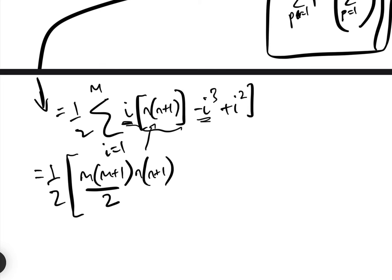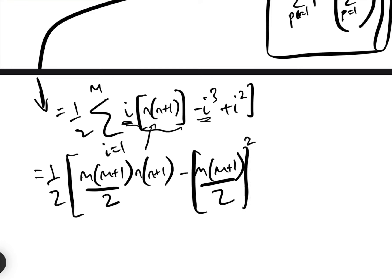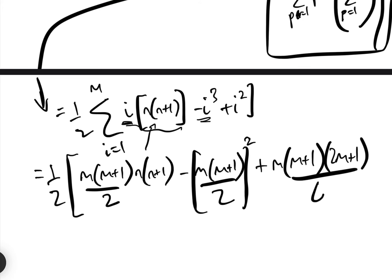And the sum of i squared from 1 to m is the well-known formula m(m+1)(2m+1) over 6. So we're getting there — this is the formula. All we need to do now is simplify. Let's take the 2 out, giving us one quarter, and also factor out m(m+1).